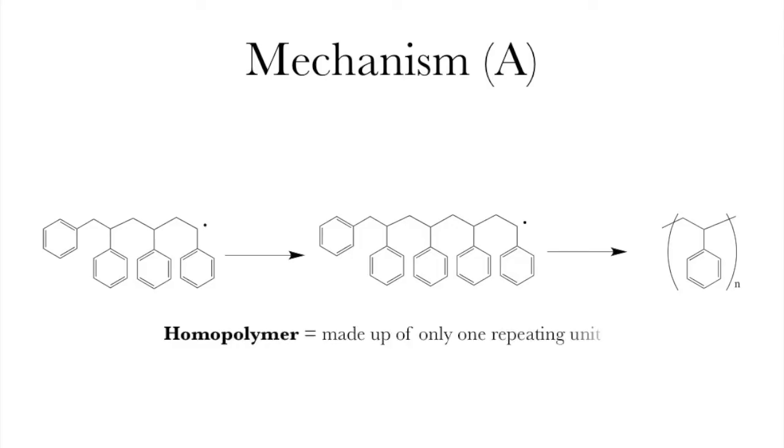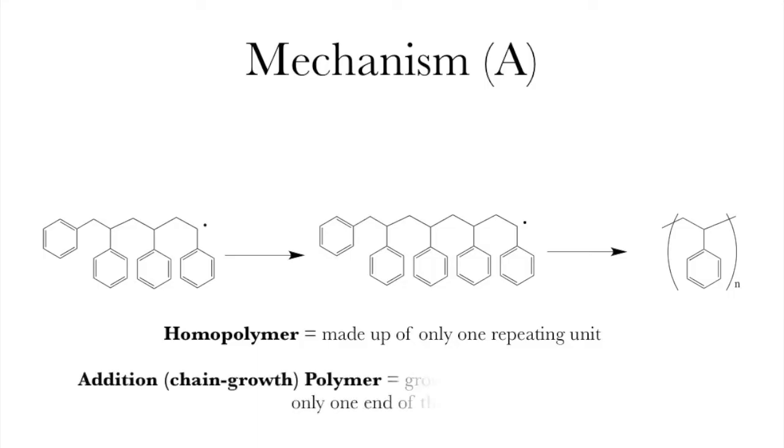Now we call this type of polymer a homopolymer, which is to say that it only has one type of monomer in it. And we refer to the mechanism as an addition or chain growth process because it only adds on one piece at a time and only from one side.